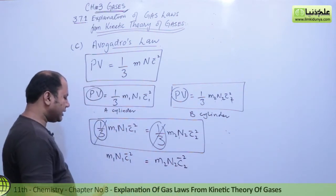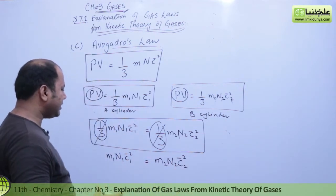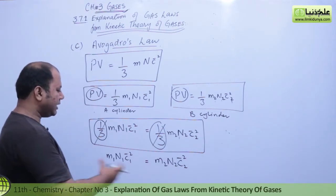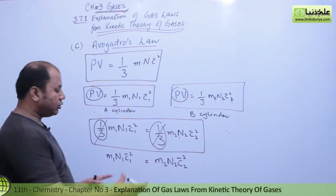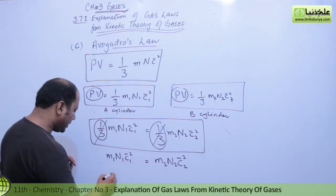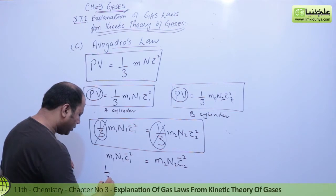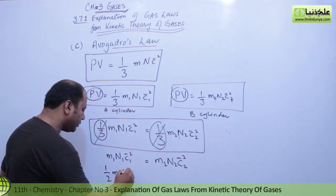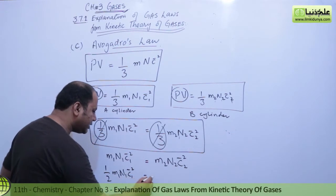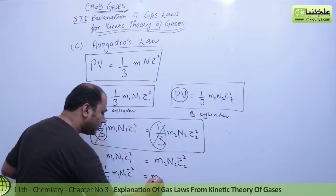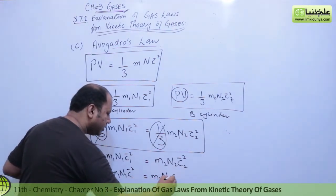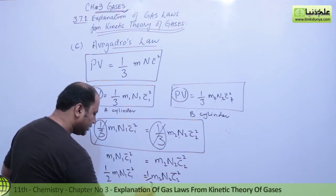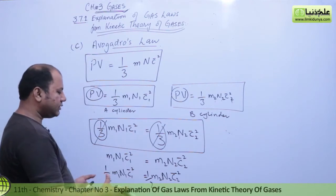Now we know about kinetic energy interpretation. If we multiply both sides by one half, kinetic energy terms appear on both sides. So multiplying through: (1/2) M₁ N₁ C̄₁² = (1/2) M₂ N₂ C̄₂².